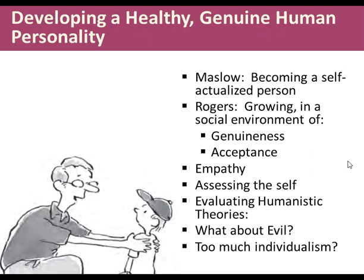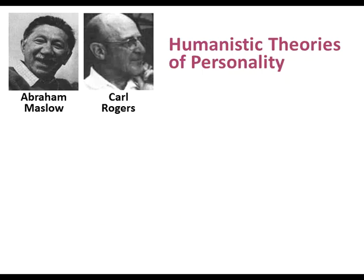Now we turn to the humanistic theories of personality. We'll look at Maslow's concept of becoming a self-actualized person, Rogers' person-centered perspective on growing in a social environment of genuineness and acceptance, and also discuss empathy, assessing the self, and evaluating humanistic theories — including critiques about evil and too much individualism.